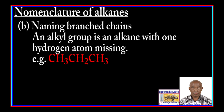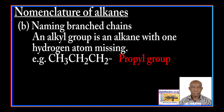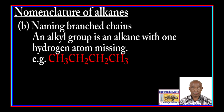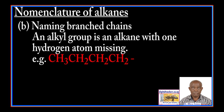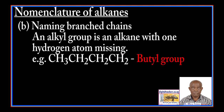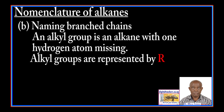CH3-CH2-CH3 is propane; CH3-CH2-CH2 is the propyl group. CH3-CH2-CH2-CH3 is butane; CH3-CH2-CH2-CH2 is the butyl group. Because alkyl groups don't show chemical properties, they are generally represented by a capital letter R. However, the length of an alkyl group might influence the level of reactivity of a functional group.